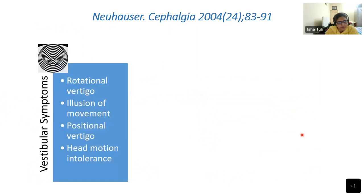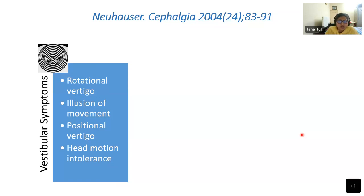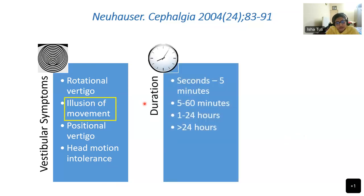The symptomatology of vestibular migraine is very varied. The patient can have vestibular symptoms of rotational vertigo, illusion of movement, and positional vertigo. In positional vertigo, unlike BPPV, the nystagmus is persistent, consistent, low to moderate, and does not disappear completely after a liberatory manoeuvre, and they can be head motion intolerant. Regarding illusion of movement, there is a feeling of disequilibrium or rocking and a feeling of out-of-body experience known as Alice in Wonderland syndrome. Duration can range from seconds to minutes to hours to even more than 2 to 3 days.